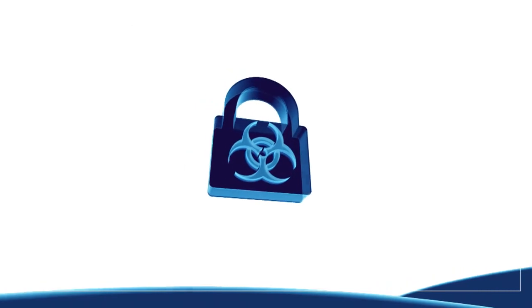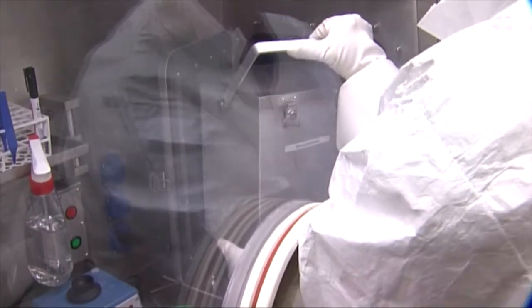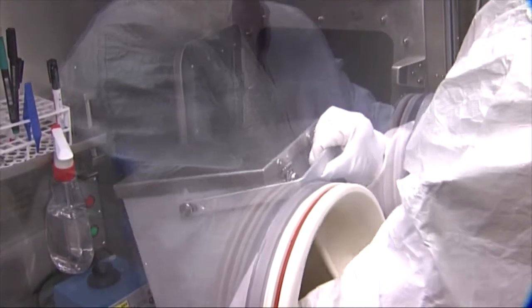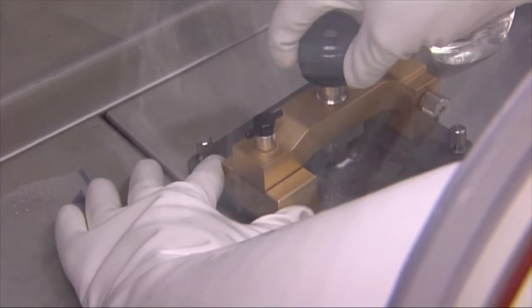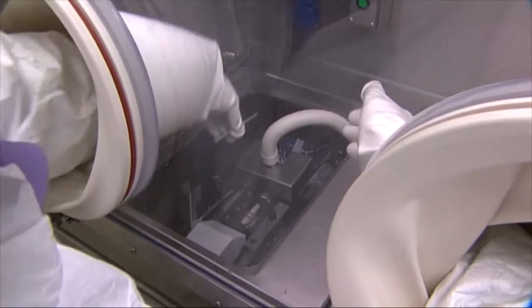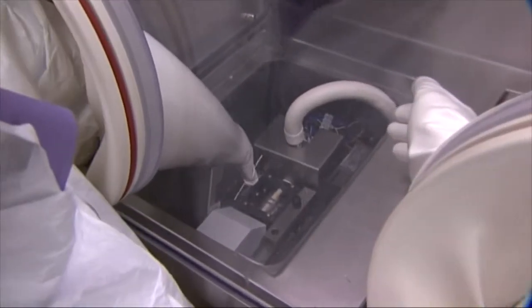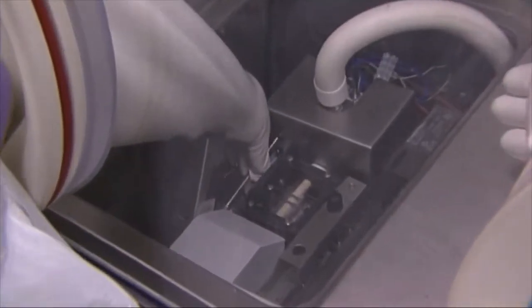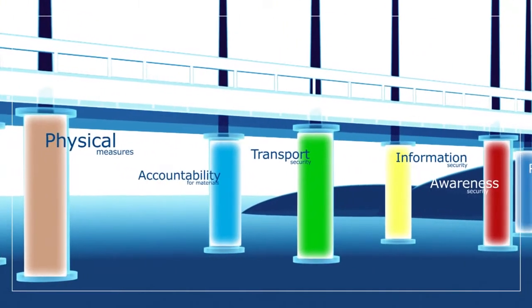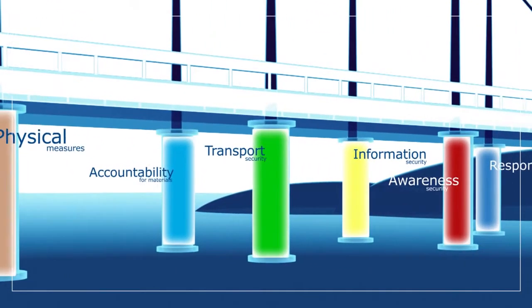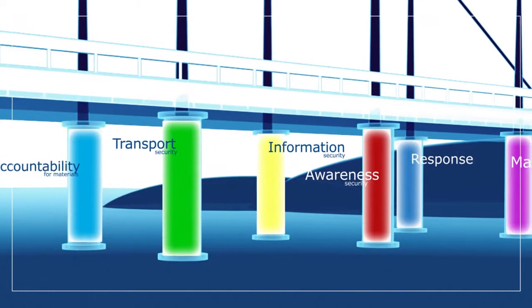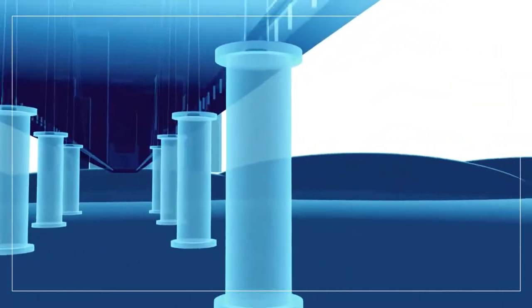By applying biosecurity measures we can reduce the risk of spread of both dangerous pathogens and confidential information. These measures consist of eight areas of focus — the eight pillars of good practice — which are all relevant to good policy on biosecurity.